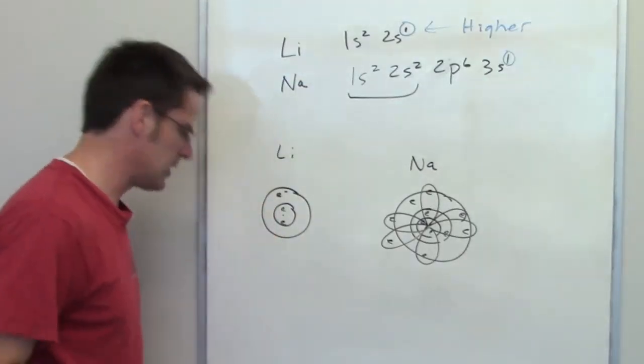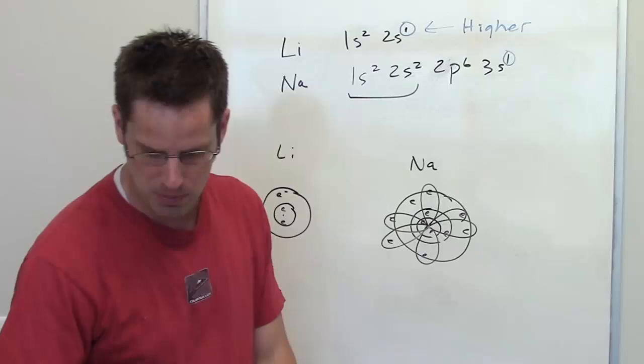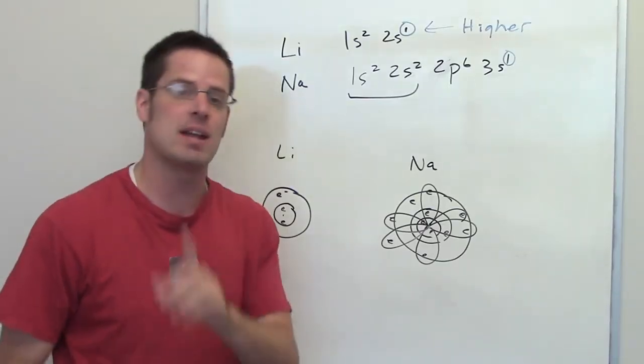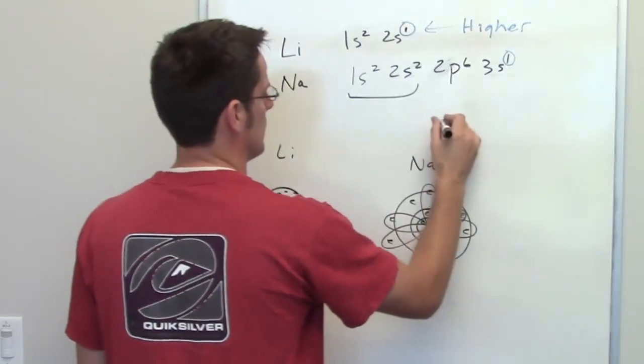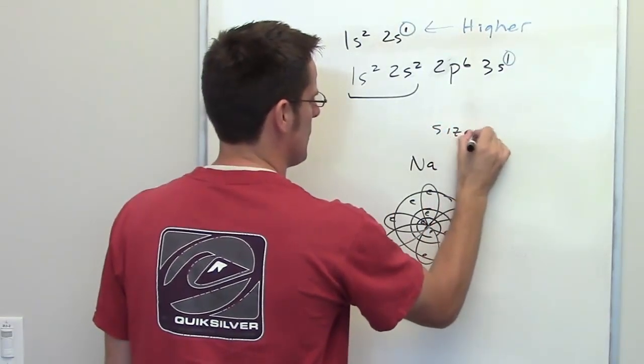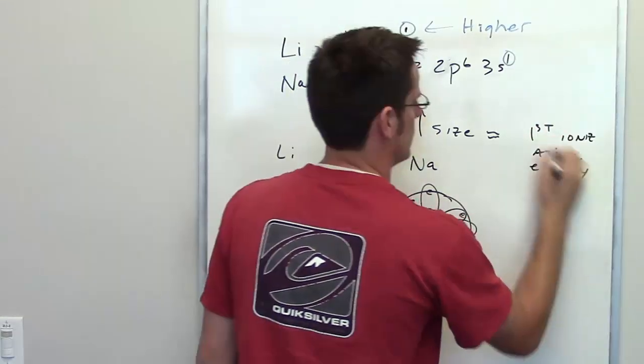That then takes us to the second question in this set, and that is, what is the general relationship between size of an atom and its first ionization energy? And here's the general relationship. As size gets bigger, first ionization energy goes down.